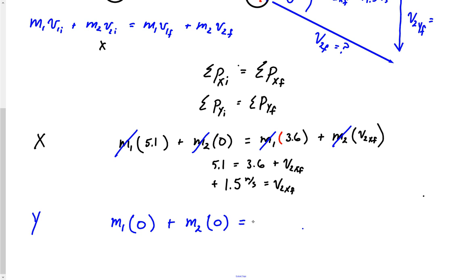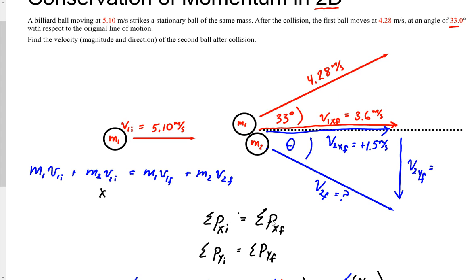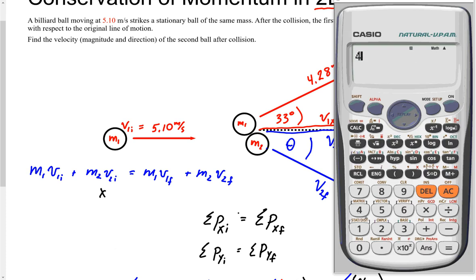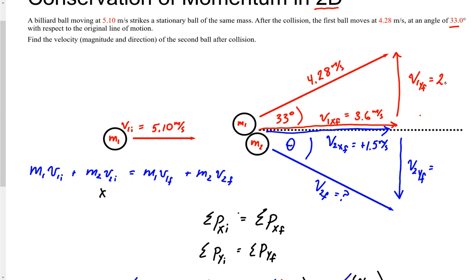And so now is equal to m1 times. So what is m1's final y velocity? And to do that, we're going to have to go back up here. And so what we've got to actually figure out is the final velocity, velocity 1's y final velocity. And to do that, we'll just do some basic trig again. Get my calculator. And this time, 4.28 sine of 33 degrees is 2.3 meters per second. So 2.3 meters per second.